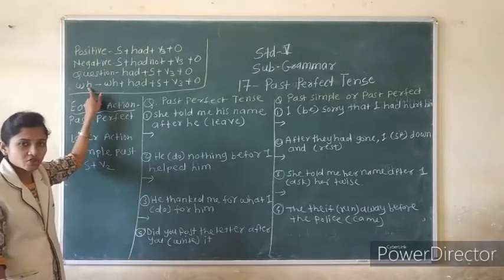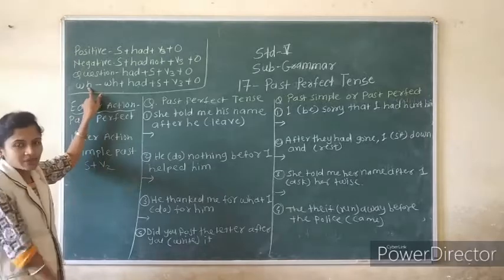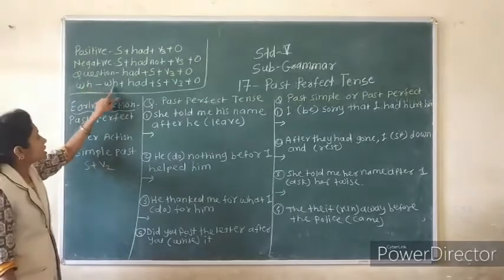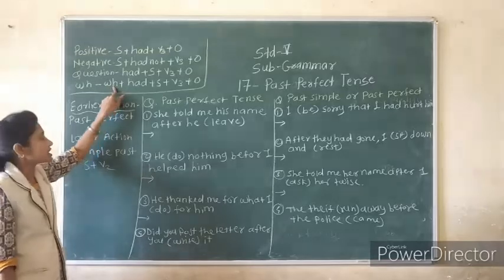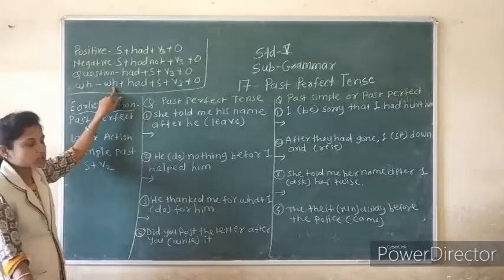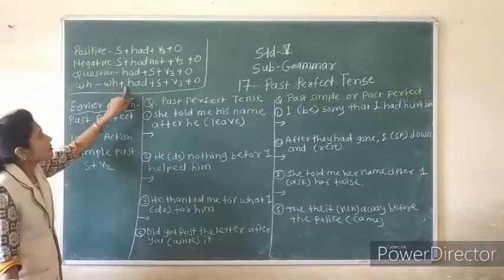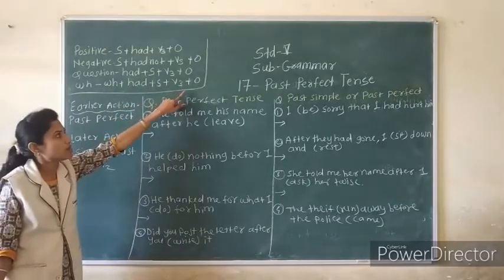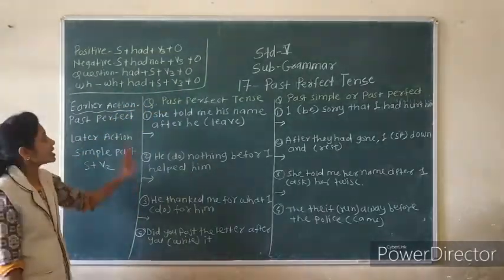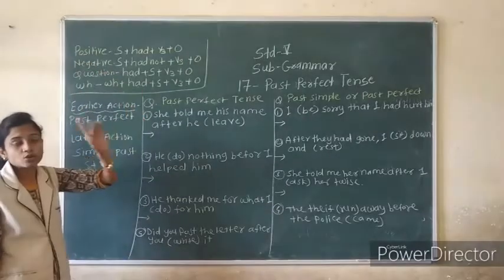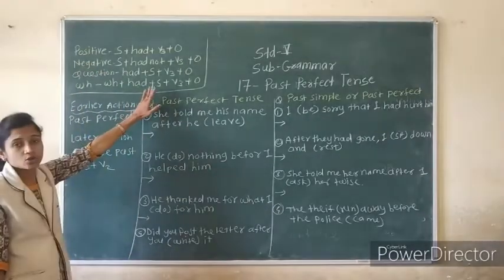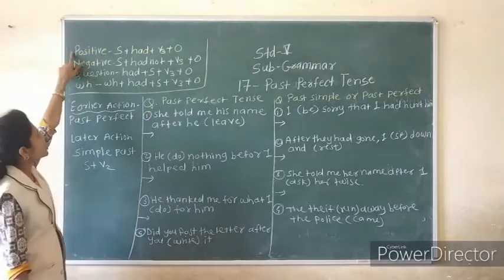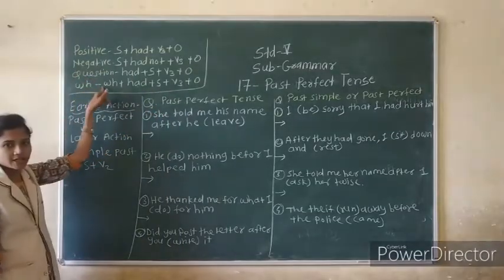When you are using a WH question in the past perfect tense, the formula is: WH word plus Had plus Subject plus verb 3 plus Object. Note down in your notebook: positive, negative, question, and WH question formulas.